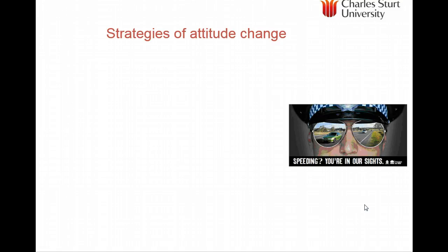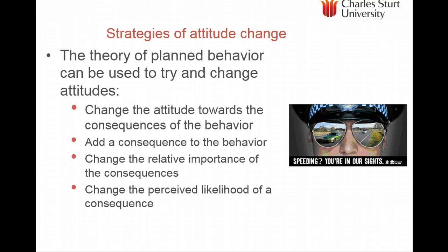How are these theories useful for changing attitudes? The theory of planned behaviour can be used in the following ways. First, change the consequences of behaviour — whether negative or positive. For example, 'Speeding — you're in our sights': the New South Wales road safety campaign tries to change a perceived consequence of behaviour, changing the perceived likelihood, such as through double demerit points. Another approach adds a further consequence — like someone losing their job because they lost their licence.